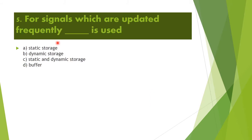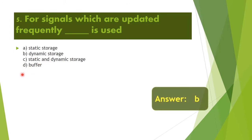Next question: For signals which are updated frequently, what is used? Option A: static storage. Option B: dynamic storage. Option C: static and dynamic storage. Option D: buffer. The correct answer is Option B — dynamic storage, because the signals are frequently updated.